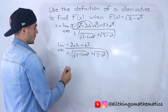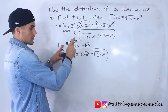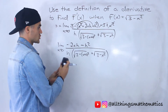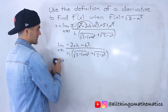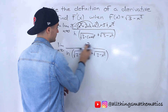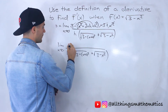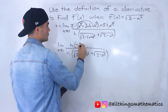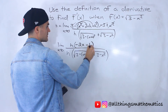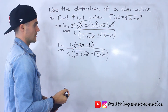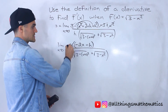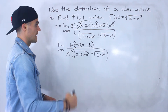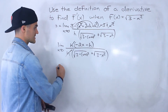Now notice what we can do in the numerator is factor out an h. We factor out an h and we're left with negative 2x minus h. Notice that the h's cancel out, and now we can plug in 0 for h.